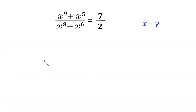Hello everyone, welcome to this problem. We need to solve the algebra equation (x⁹ + x⁵) divided by (x⁸ + x⁶) is equal to 7 over 2. Our job is to find all possible values of x.